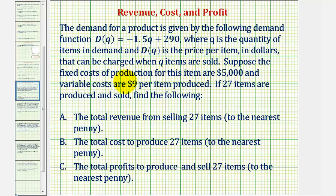Suppose the fixed cost of production for this item is $5,000 and the variable costs are $9 per item produced. If 27 items are produced and sold, find the following: A, the total revenue from selling 27 items; B, the total cost to produce 27 items; and C, the total profits to produce and sell 27 items.